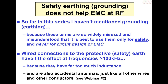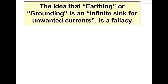A much wiser man than me once called the safety grounding system in a building an 'interference redistribution network,' and he was very right. Many people have this idea that ground is some kind of infinite sink for unwanted current — that if you've got RF noise you don't want, you connect it with a capacitor to ground and it disappears. That can't happen. It's a fallacy. It never has happened and is not capable of happening.